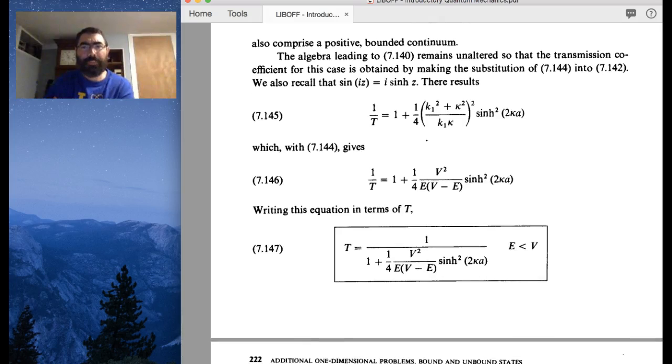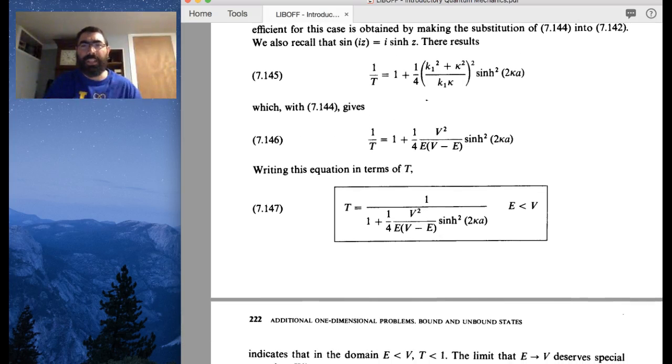And that's pretty much it. So now what we have is we can calculate the transmission probability, or it's easier to write down as one over the transmission probability, in terms of the energies, the energy of the height of the barrier V.